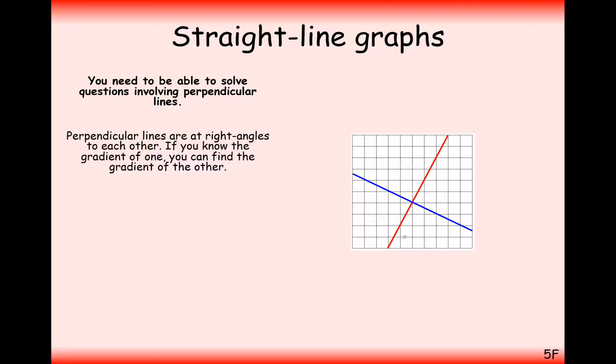For example, in this sketch here, we have two lines that are at a right angle to each other. The gradient of the red line goes one across and two up, and if we look at the gradient of the blue line, we can clearly see here that if we go two across, we go one down.